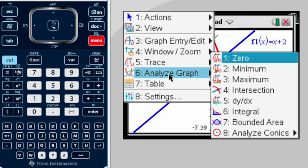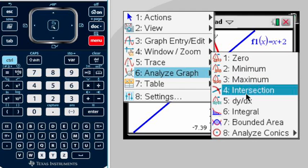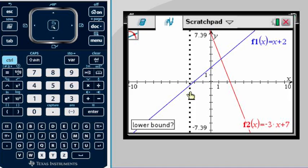We're going to use Analyze Graph. After we select Analyze Graph, you will see number 4 is Intersection. You're going to select this and then you'll notice you're getting like a bar. This is asking you in a graphical way where is the section that you want to look for the intersection. In this case we only have linear functions so there's only one, but for other examples you might have more than one intersection.